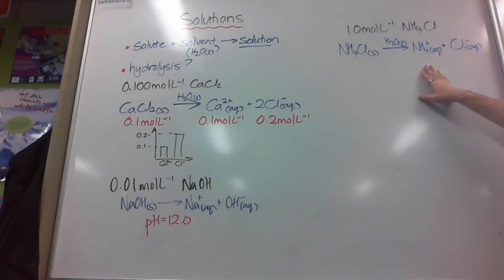In this case here, there's something else happening. Chloride ions do not react with water, but ammonium ions do. Ammonium is the conjugate acid of ammonia. Ammonia is a weak base.